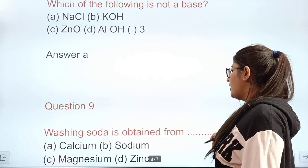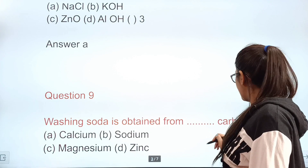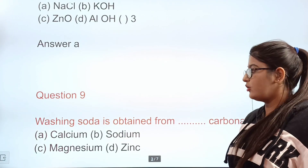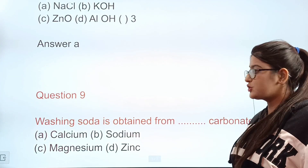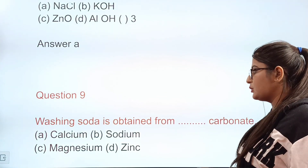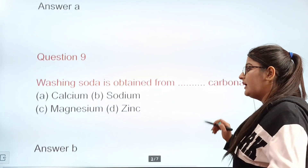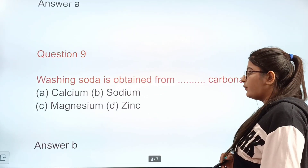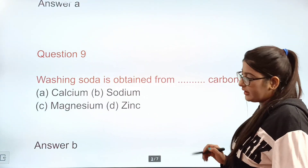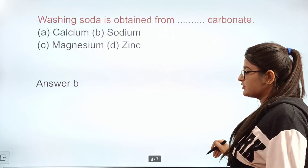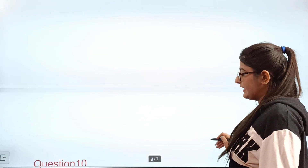Question 9: Washing soda is obtained from dash carbonate. Options: calcium carbonate, sodium carbonate, magnesium carbonate, zinc carbonate. Correct answer: B — sodium carbonate.